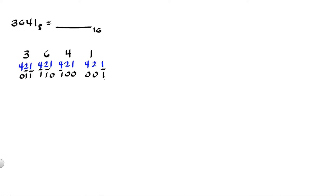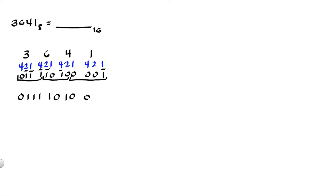Then we arrange the binary numbers into groups of 4 since we are solving for hex. So we have groups of 1, 2, 3, 4 — that is our first group, then our second group, and our last group. Then we rewrite the number: 0, 1, 1, 1, 1, 0, 1, 0, 0, 0, 0, 1.